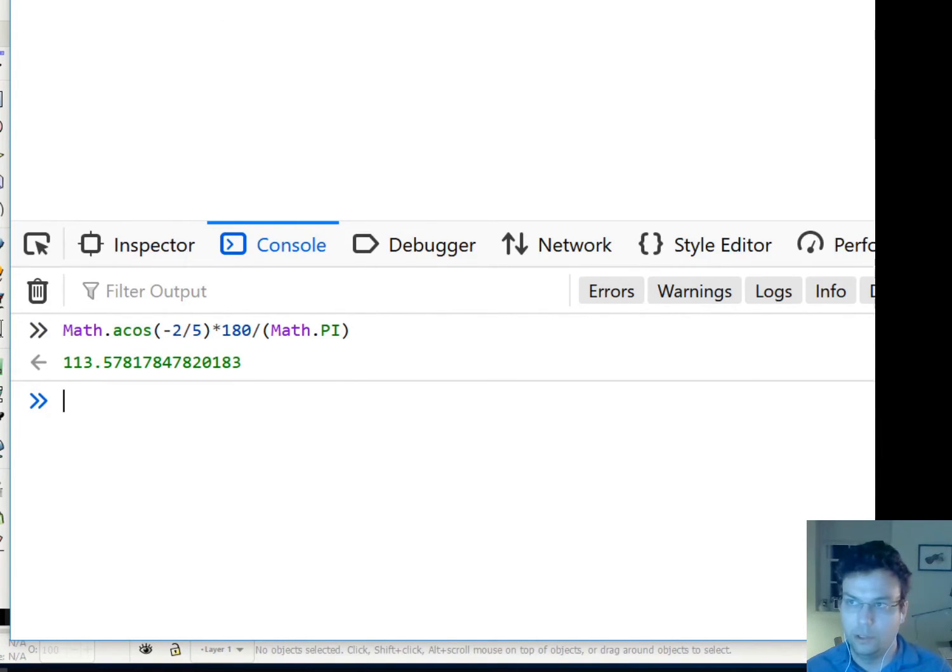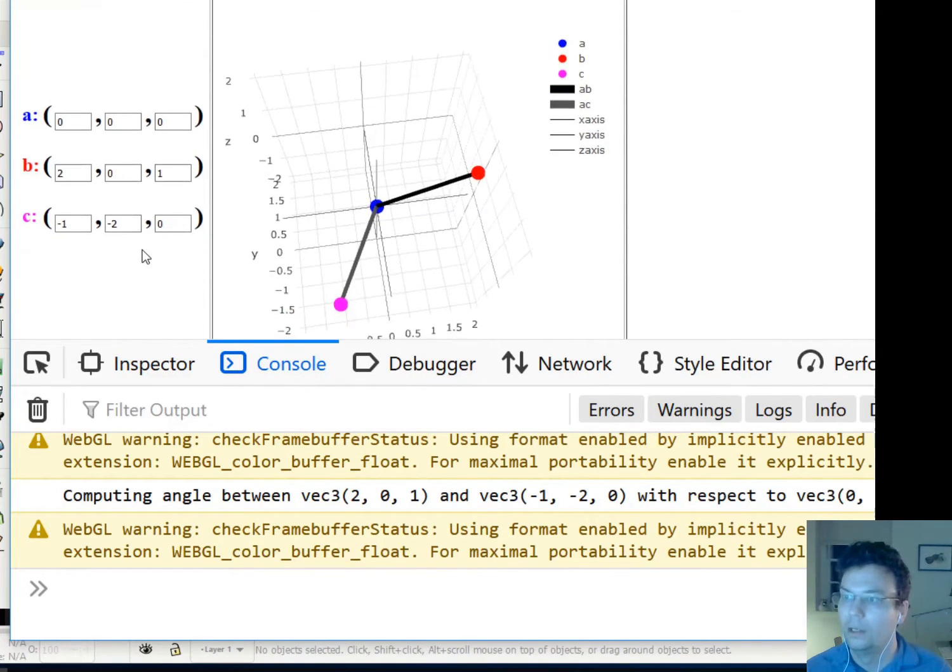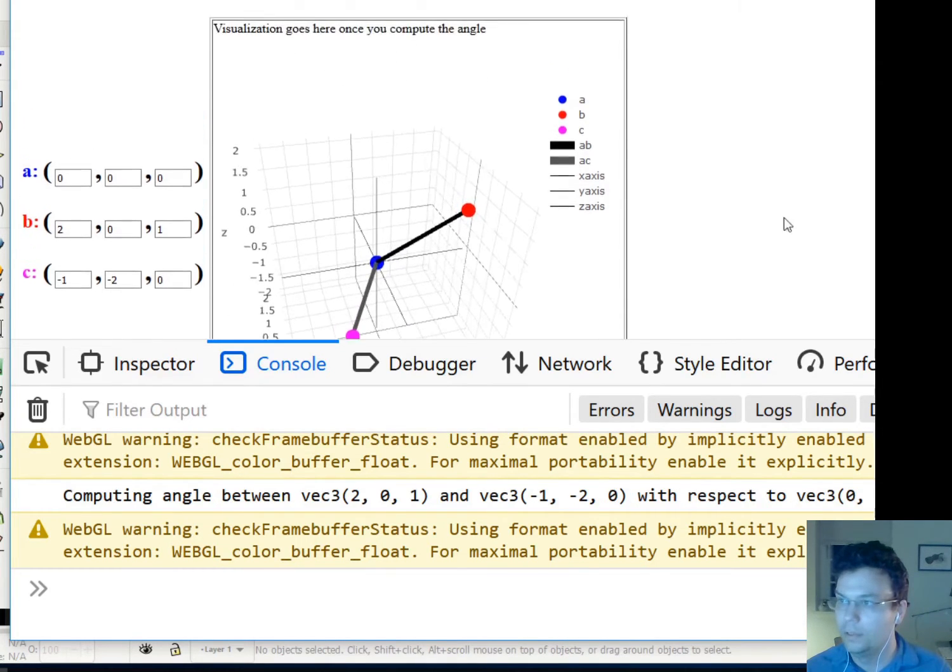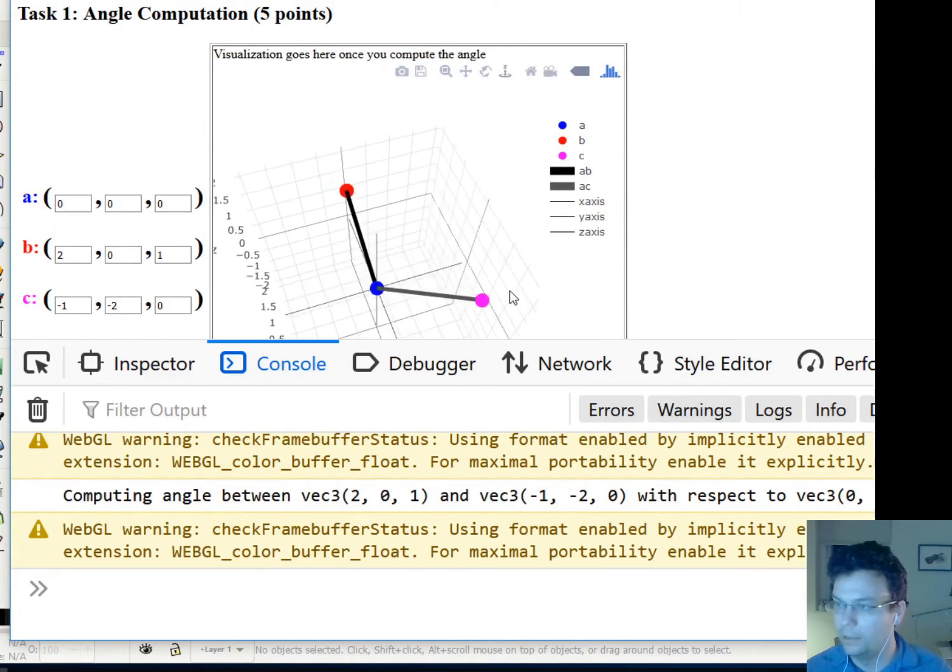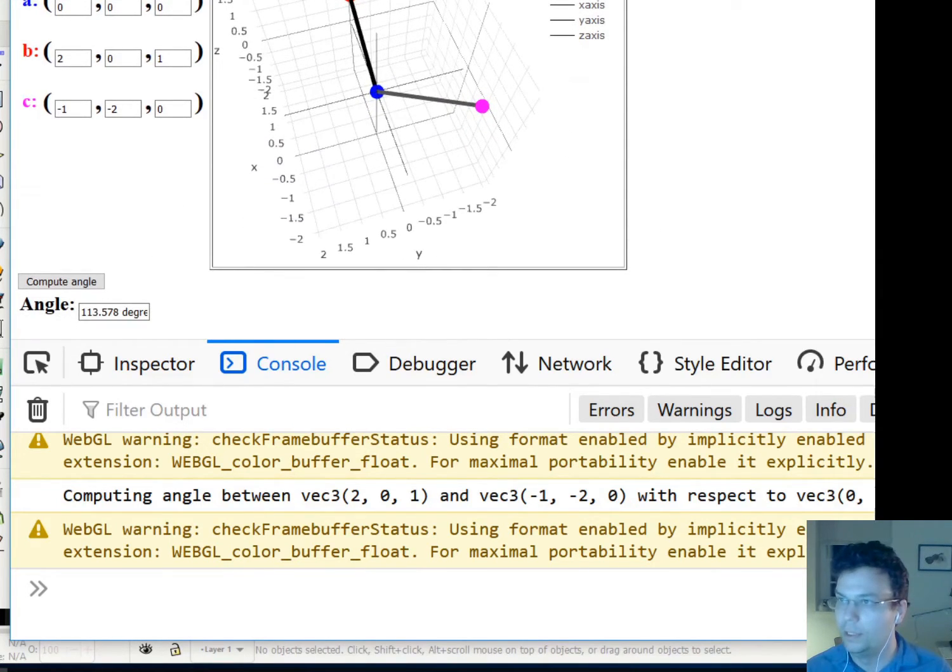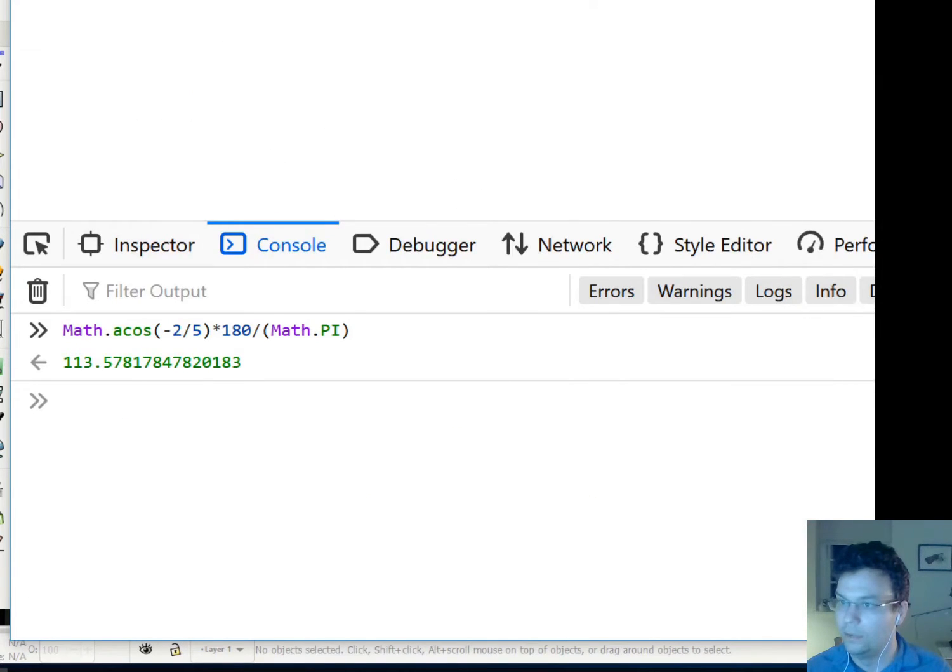The first task that you're going to do in the homework is actually to code this up in general. You should be able to choose two vectors and compute the angle between them. Here's this example. You can see this makes an angle slightly greater than 90 degrees, and when I plug it in, it tells me 113.578.